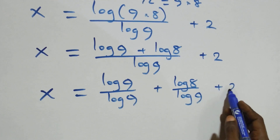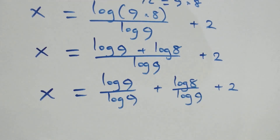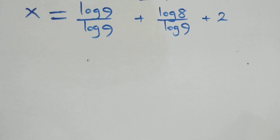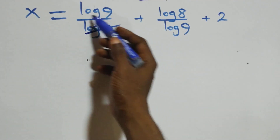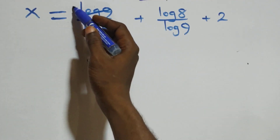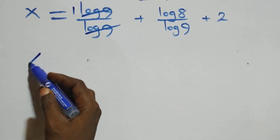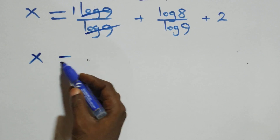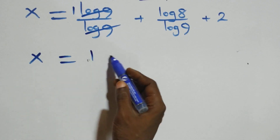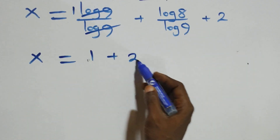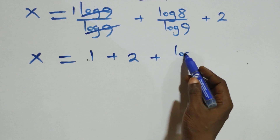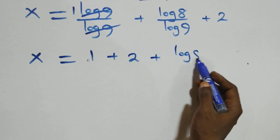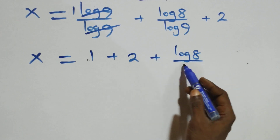The log 9 terms cancel each other and we have 1 left, which implies x equals 1 plus log 8 over log 9 plus 2.